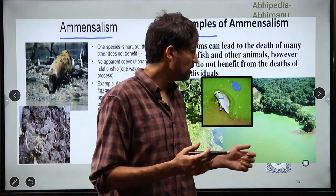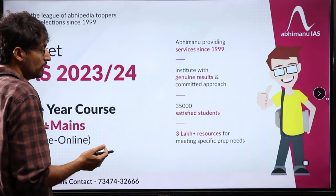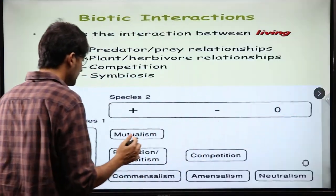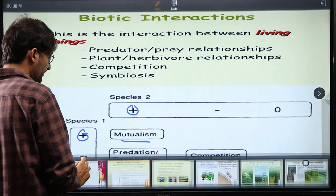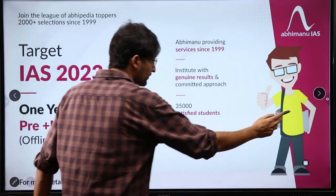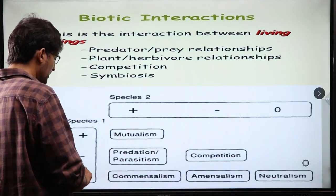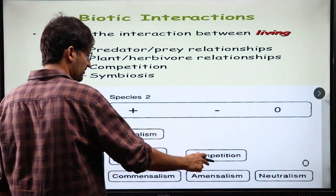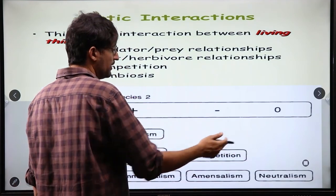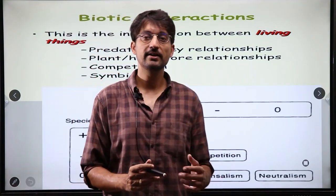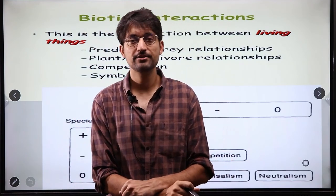So these are all biotic interactions. To repeat: positive-positive is mutualism, positive-negative is predation or parasitism, positive-zero is commensalism, minus-minus is competition, negative-zero is amensalism, and finally the last category is neutralism — zero-zero. This was today's session on biotic interactions.